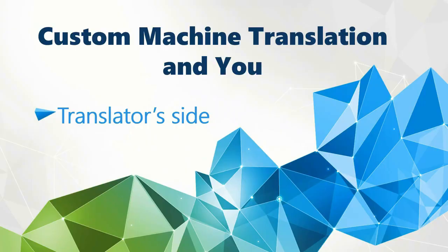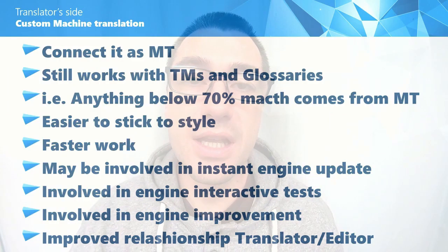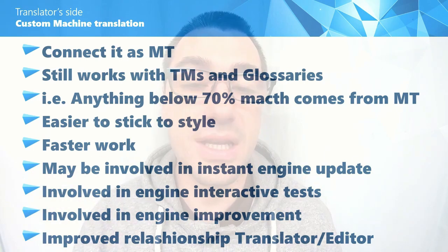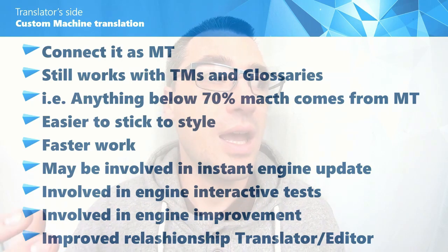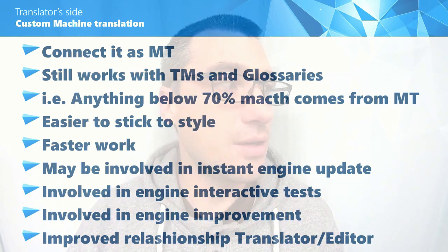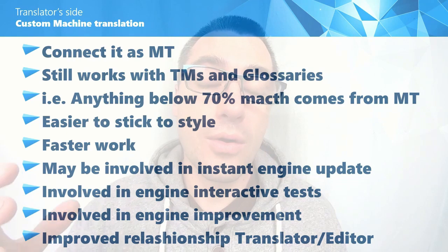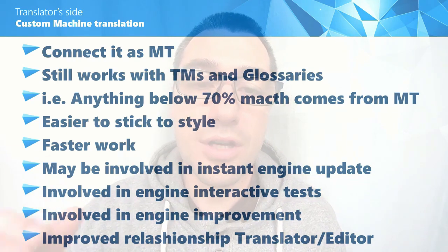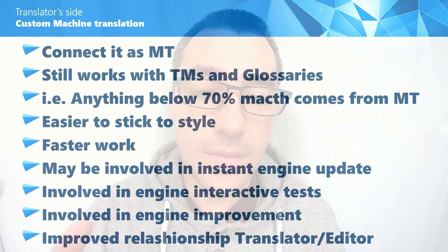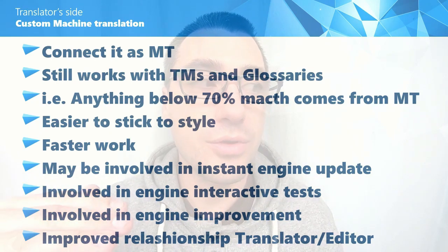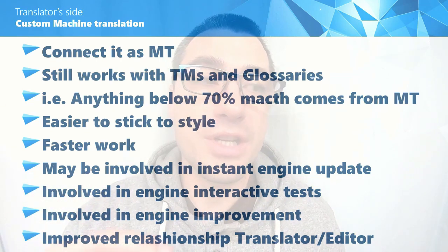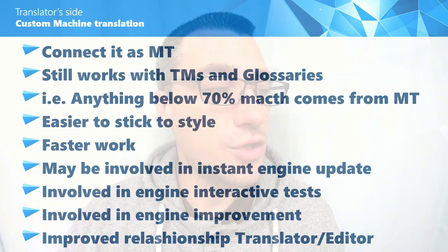Now let's talk about it from the translator's side. What can the translator do with a custom MT? He will connect it into his CAT tool just as a regular MT. From his own CAT tool, he will still be able to access his own translation memories and glossaries. So if you have a threshold set in your CAT tool — for example, everything that comes below a 70% match from your translation memory — those entries will be generated by the machine translation.